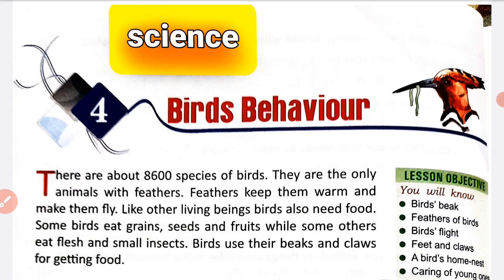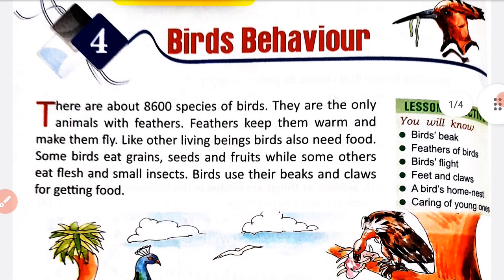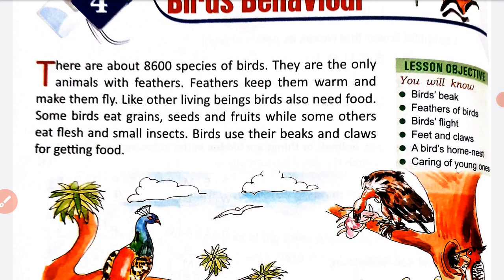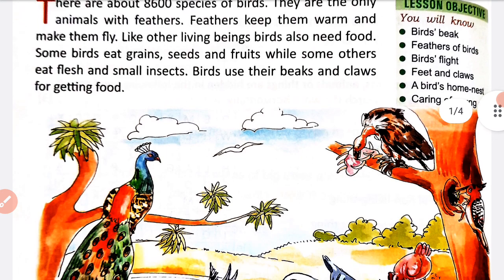Hello everyone, today we are going to start a new chapter of science - Chapter 4: Birds Behavior. In this video we will cover three topics: birds' beaks, feathers of birds, and birds' flight. There are about 86 species of birds. Birds are the only animals with feathers, and feathers help them with their body and flight. Birds also use their beaks and claws to help them get food.